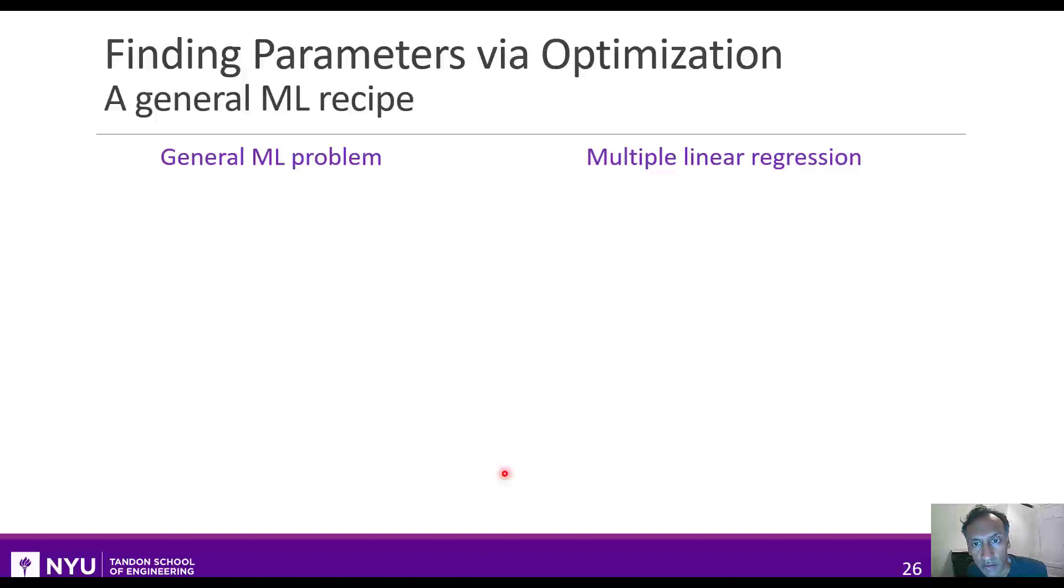Alright, before we go on, there's a general pattern that we see in fitting these models that applies to typical machine learning problems. In each machine learning problem, you pick a model with some parameters. So for example, in multiple linear regression, that model is to say the predicted value is a linear combination of the features, and the parameters are the coefficients in that linear combination. You then get data, which in our case are the n samples xi and yi.